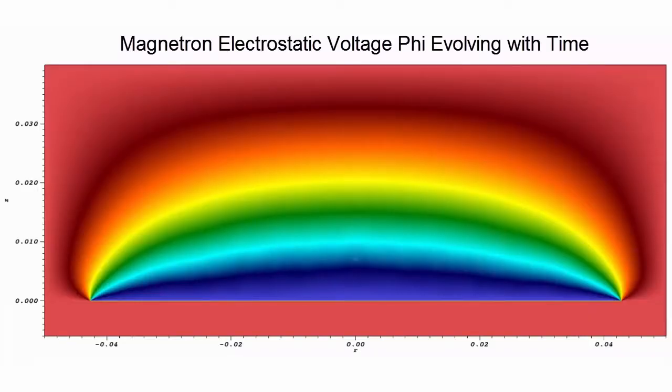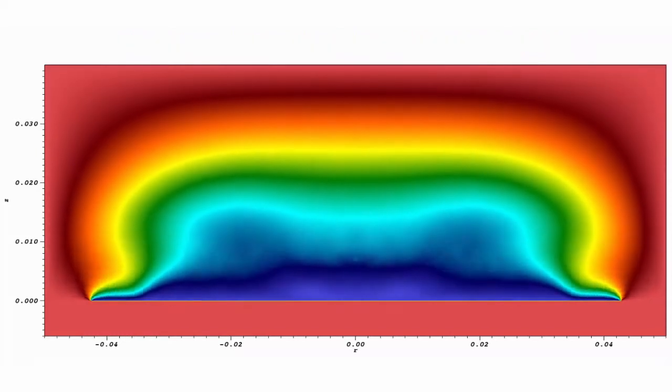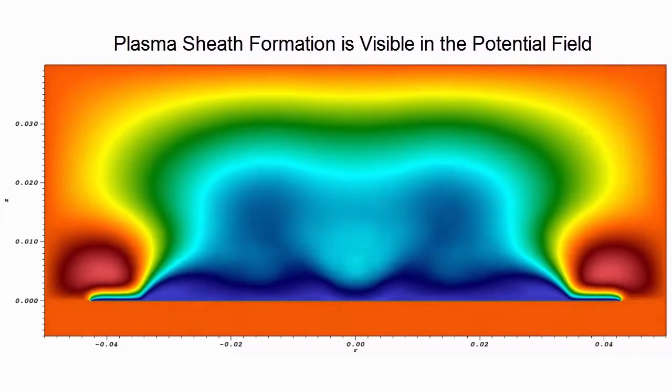The following animation shows the voltage, phi, evolving in time. It demonstrates the effect of the plasma on the potential field and the formation of the plasma sheath.